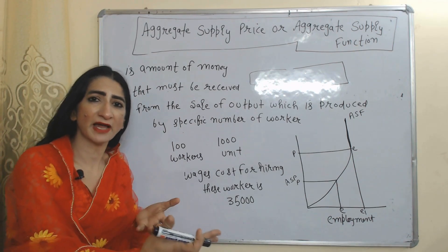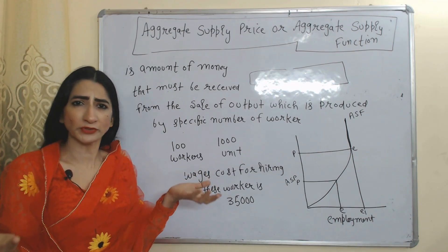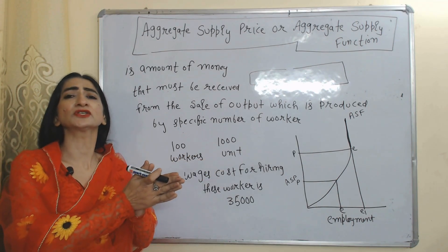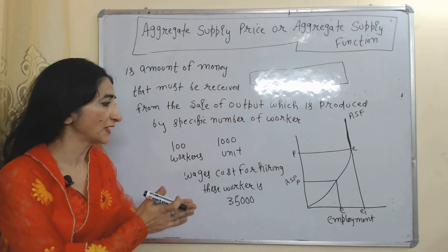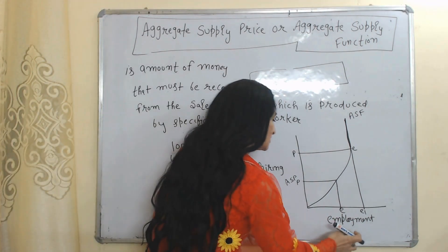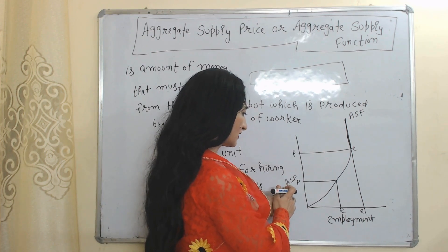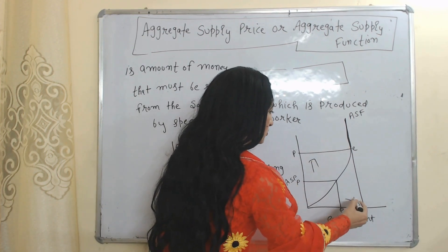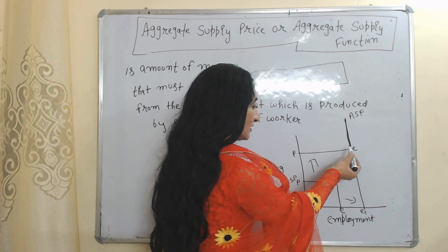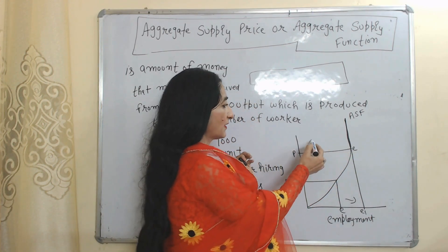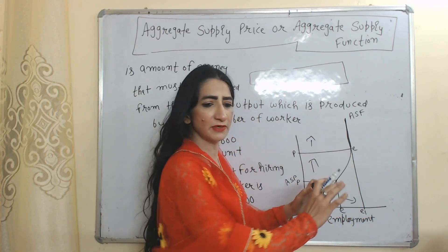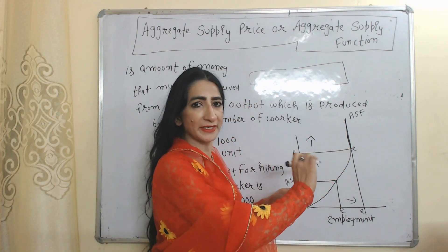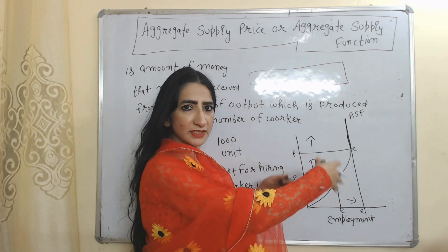Aggregate supply price and employment have a direct relation. As aggregate supply price increases, output increases, employment increases, and national income also increases. In this diagram, on the X-axis we have employment and on the Y-axis we have aggregate supply price. As aggregate supply price increases, employment also increases, but after point E, only aggregate supply price will increase — employment will not increase, because E is the full employment point.